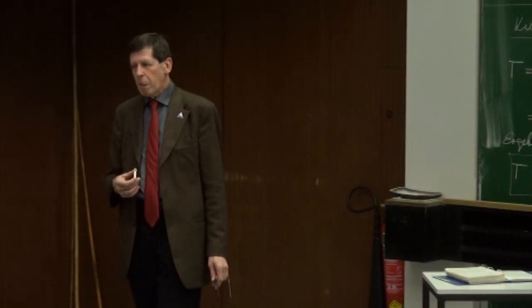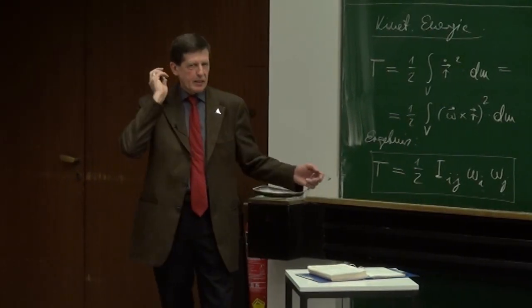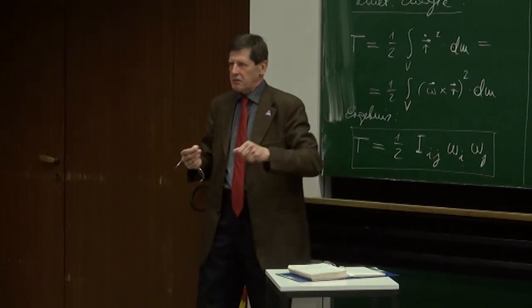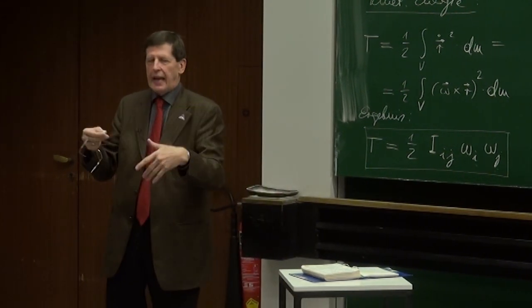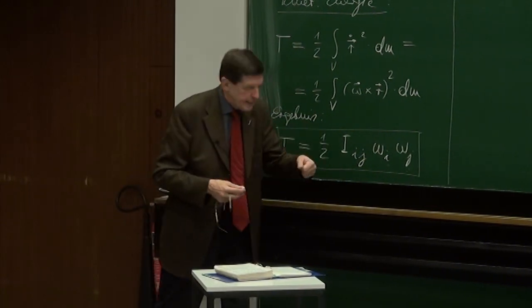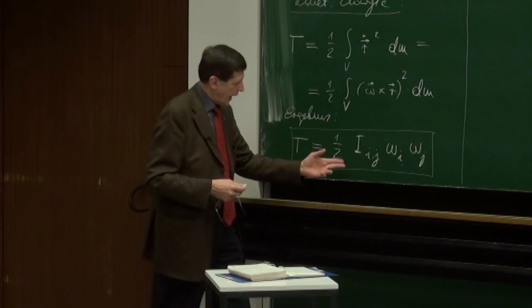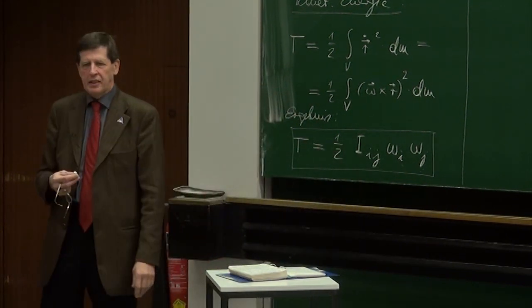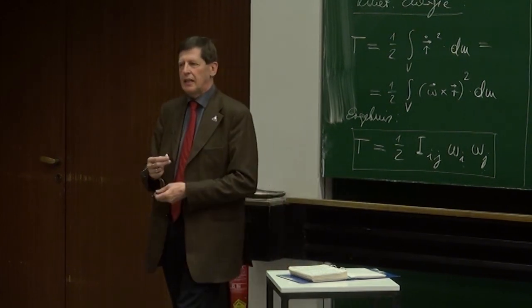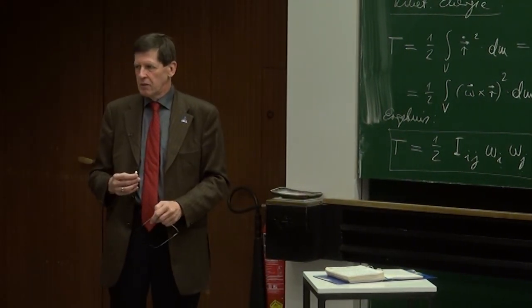Frage aus dem Publikum: Ob entlang der Hauptdiagonalen lauter Quadrate stehen? Natürlich. Wenn man also I₁₁ Omega₁ Omega₁ hat, dann ist das I₁₁ mal Omega₁ zum Quadrat, weil Omega₁ mal Omega₁ ist Omega₁². Im Rahmen dieser ganzen Summe von neun Termen kommt dann auch noch I₂₂ mal Omega₂² plus I₃₃ mal Omega₃² vor. Aber die ganzen gemischten Terme I₁₂ Omega₁ Omega₂ und so weiter kommen auch vor bei den Termen, wo man eben nicht Diagonalelemente hat. Es ist einfach eine Doppelsumme.